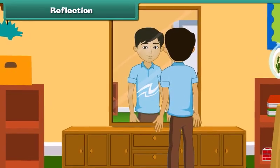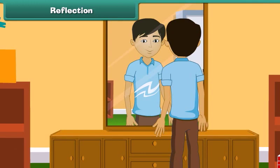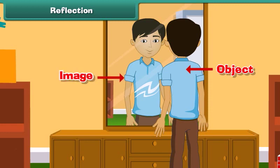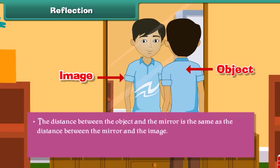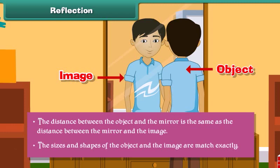When you position yourself in front of a mirror, what you see in the mirror is your reflection. You are the object and the reflection is the image. Here are some interesting facts about reflections: the distance between the object and the mirror is the same as the distance between the mirror and the image, and the sizes and shapes of the object and the image match exactly.